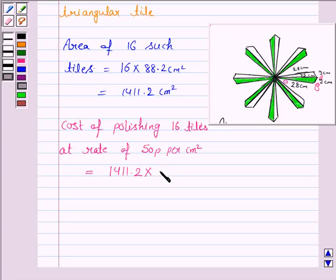into the cost of polishing per cm² which is given to be 50 paisa. And 50 paisa when converted into Rupees becomes 50 upon 100.